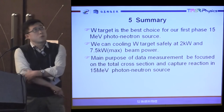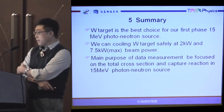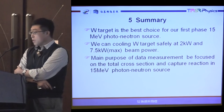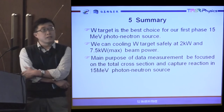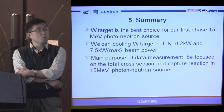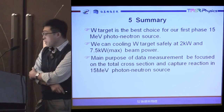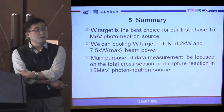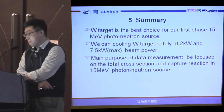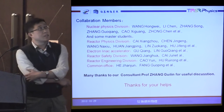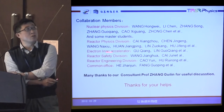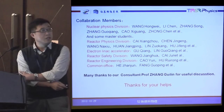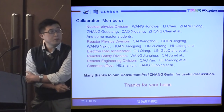Finally, a brief summary. Tungsten target is the best choice for our first-phase 15 MeV photoneutron source, and we can cool the tungsten target safely at 2 kW and 7.5 kW. The main purpose of the measurements is to focus on the total cross-section and capture reaction in the 15 MeV photoneutron source. Here are the collaboration members, including the nuclear physics division, reactor physics division, electron linac accelerator group, and reactor safety division, plus some people from the common office.